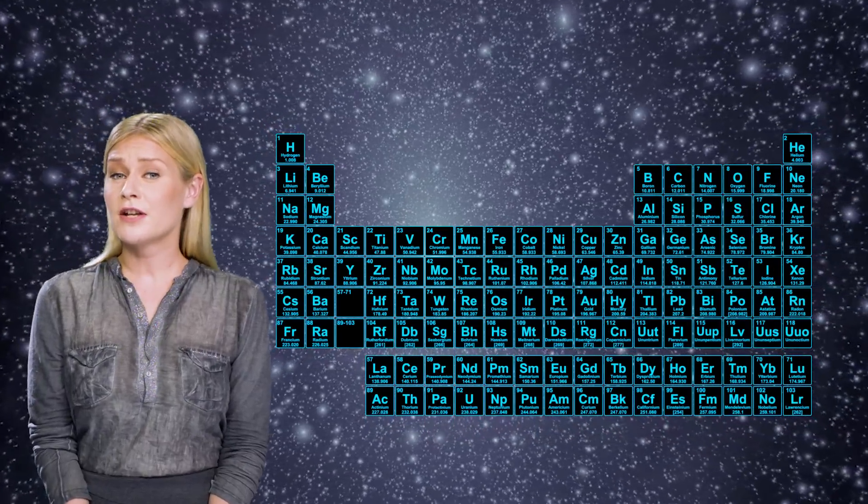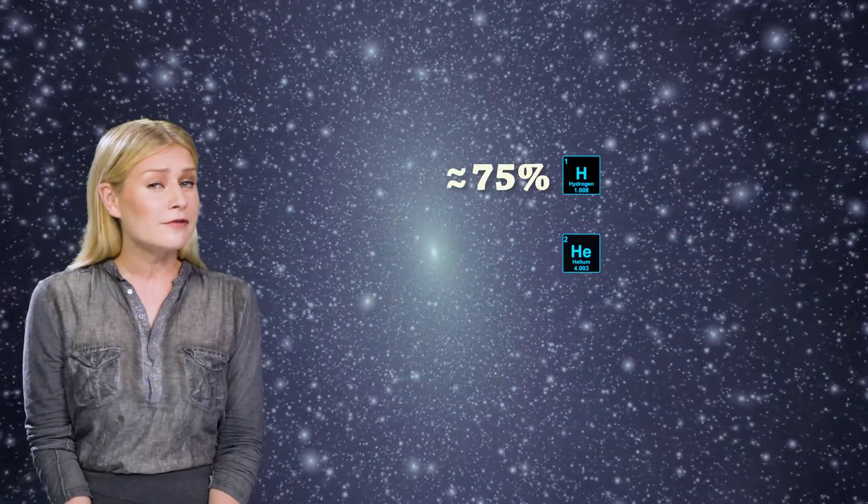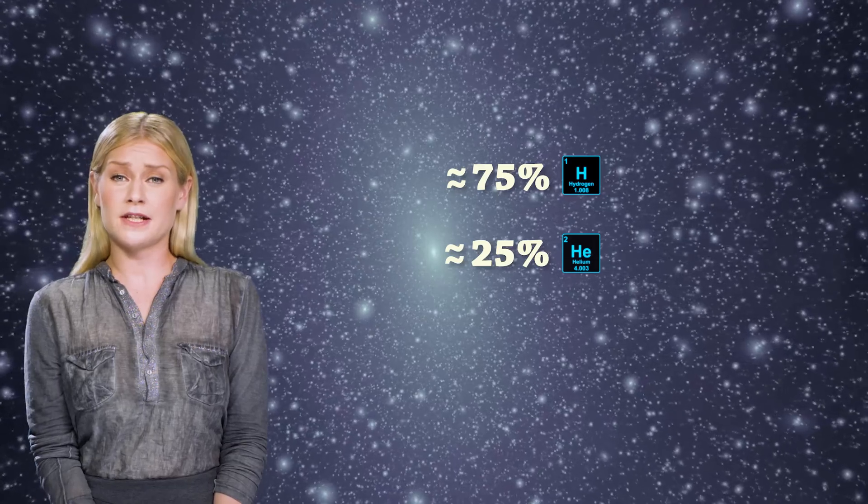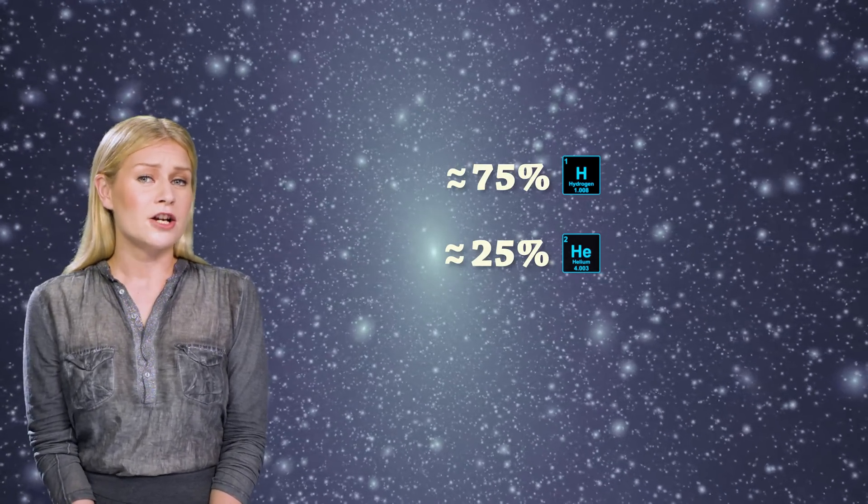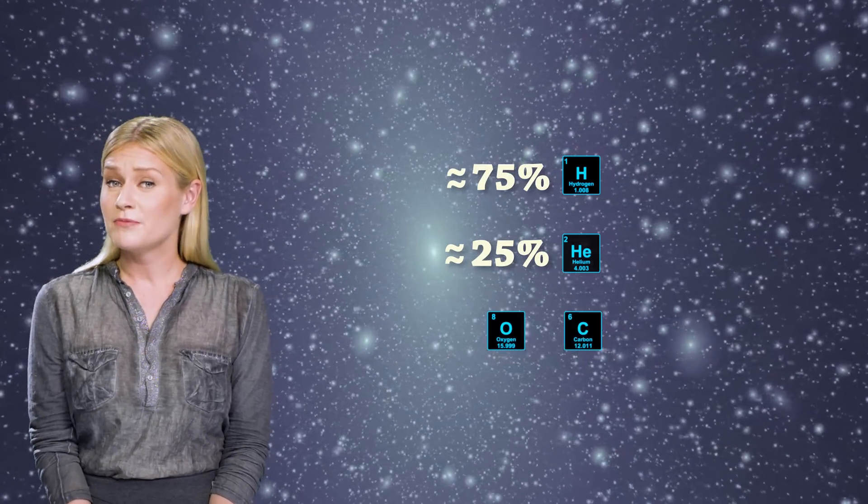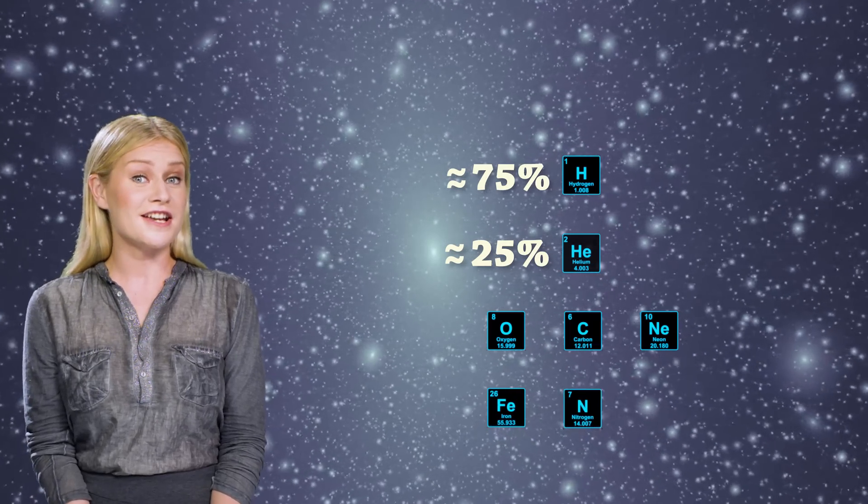But what is the universe made of? Or more precisely, what elements are there most of from the periodic table? It turns out that the universe is made of 75% hydrogen and 25% helium, a little less. And the next most abundant elements are then oxygen, carbon, neon, iron, nitrogen, and silicon.